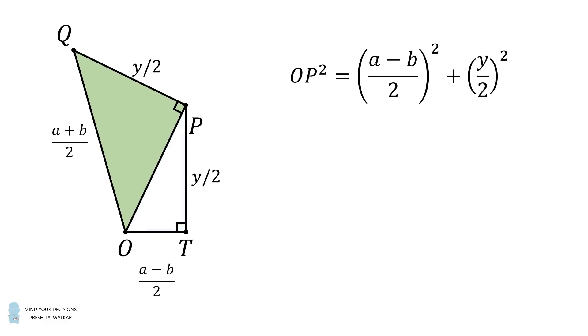Now, in the green triangle we can calculate OP squared in a different way. It will be equal to the square of the hypotenuse of this triangle minus the square of one of its legs. So this will be the quantity a plus b over 2 squared, minus y over 2 the quantity squared.